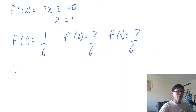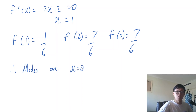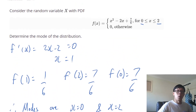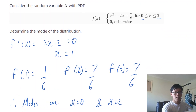Since we have two modes, our continuous probability distribution is bimodal. Therefore, our modes are x = 0 and x = 2. So that's how you find the mode of a continuous probability distribution — you need to check three things: the stationary points, the lower boundary, and the upper boundary.